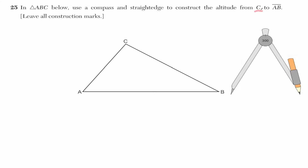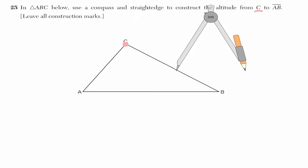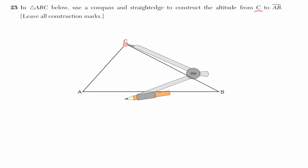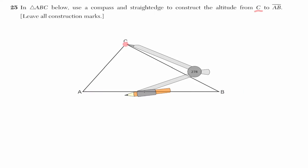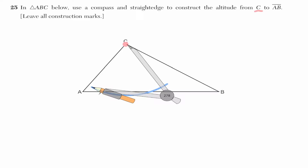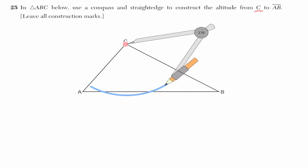Let's identify the point that we want the altitude to pass through. We're going to get our compass and place the metal leg at point C. Now we want to open our compass so that it intersects at two locations on line AB — the line where we want our altitude to be. Notice that when I perform a movement with my compass, I am intersecting line AB at two different locations.